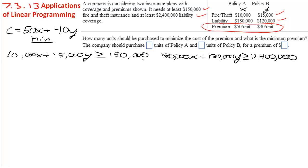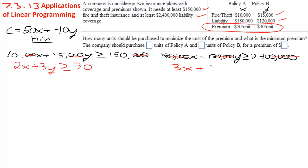You can work with these big numbers, or you can realize that these are just inequalities. Just like an equation you can simplify by dividing everything by a thousand, and then you can also divide by 5. This reduces the first constraint down to 2x plus 3y greater than or equal to 30. For the second one, you divide by 10,000 and then by 6, giving you 3x plus 2y greater than or equal to 40.